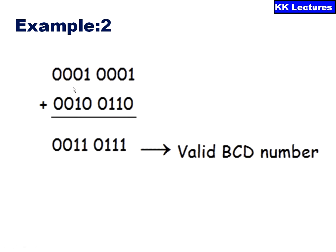Now I am using two-digit values for the second example. This BCD number is equal to decimal eleven and the other BCD number equals decimal 26. Adding them: one plus zero is one, zero plus one is one, zero plus one is one, zero plus zero is zero, and continuing the addition gives the result thirty-seven, which is a valid BCD number.